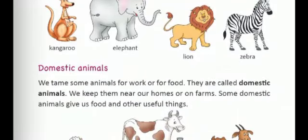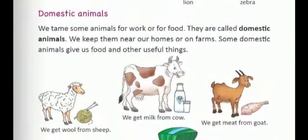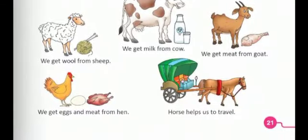Now let us move to the next topic, that is domestic animals. We tame some animals for work or for food. They are called domestic animals. We keep them near our homes or on farms. Some domestic animals give us food and other useful things. We get wool from sheep, milk from cow, meat from goat, eggs and meat from hen. Horse helps us to travel, also called goda gadi in Hindi.